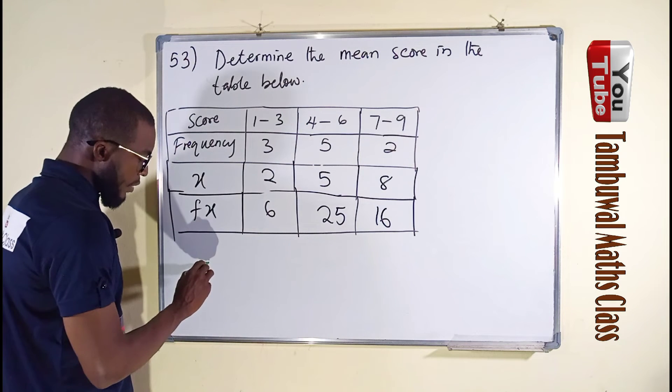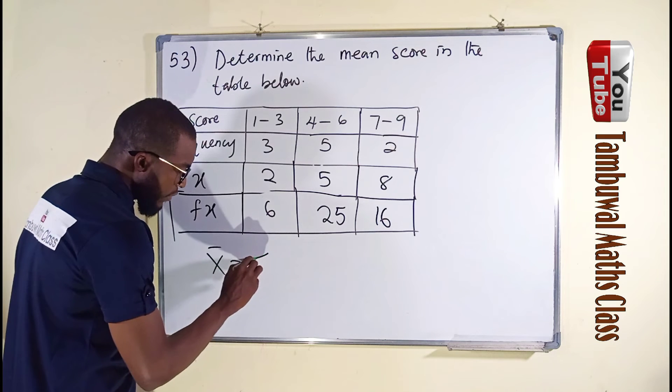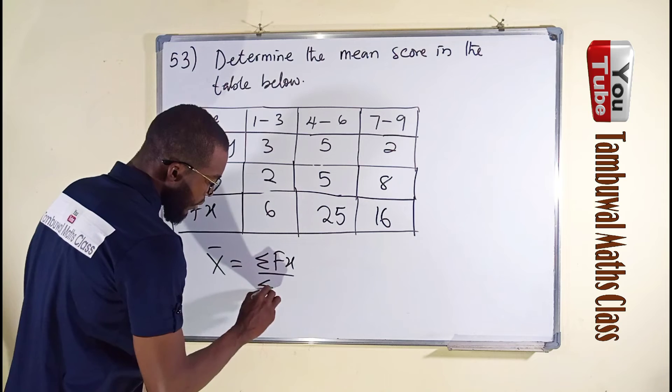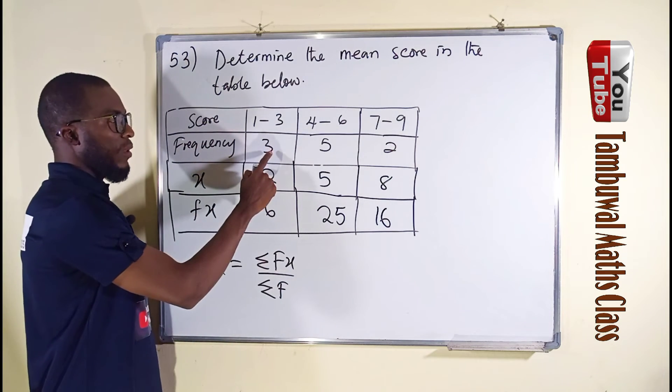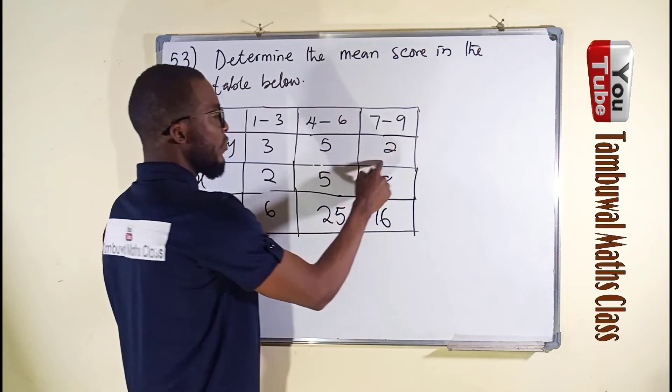Remember, our mean is denoted by x bar equals summation of fx divided by summation of f. Summation of f: 3 plus 5 is 8, then 8 plus 2 is 10.